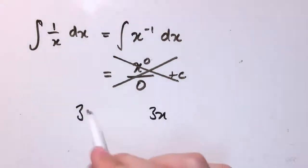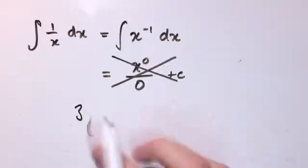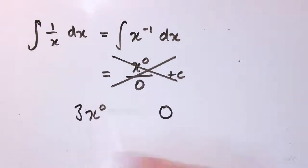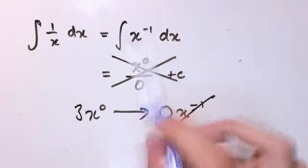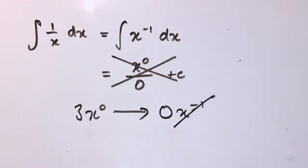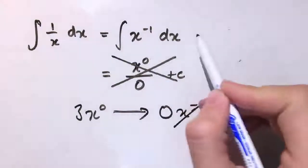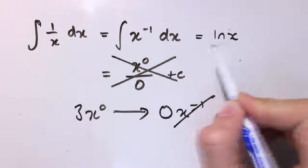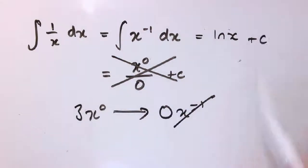So I multiply by 0 and get 0. There is no case that gives us x to the minus 1 when we differentiate something like this. So the answer here is actually a function that you'll meet a lot later on in the course, which is called the logarithm of x, but we'll come back to that much later.